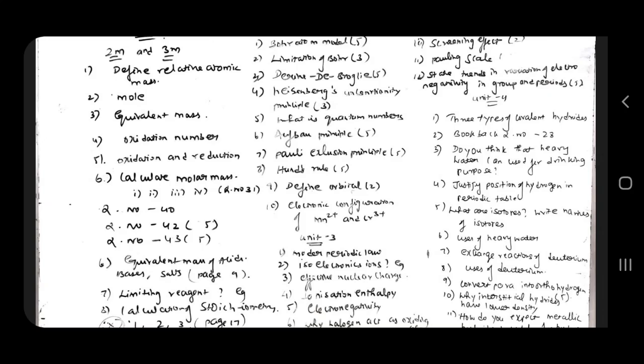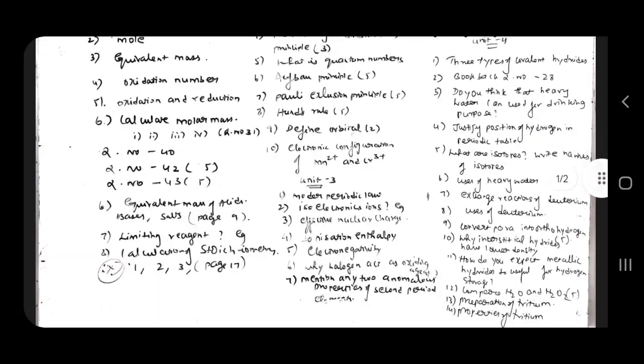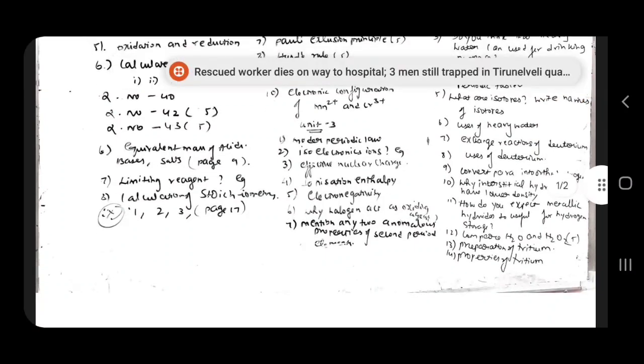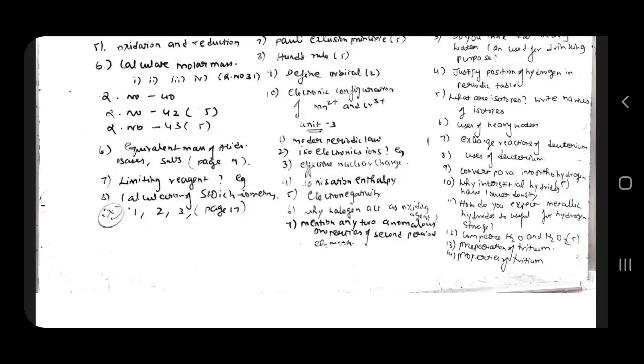Do you think heavy water can be used for drinking purpose? Justify position of hydrogen in periodic table, 2 mark, 3 mark. Isotope types of isotope, uses of heavy water 3 mark. Exchange reaction of deuterium very very important 3 mark. This is the book back uses of deuterium 2 mark. Convert para into ortho 5 mark, very very important. Why interstitial hydrides have lower density 3 mark. How do you expect metallic hydrides to be useful for hydrogen storage 3 mark. Types of hydrates and properties.